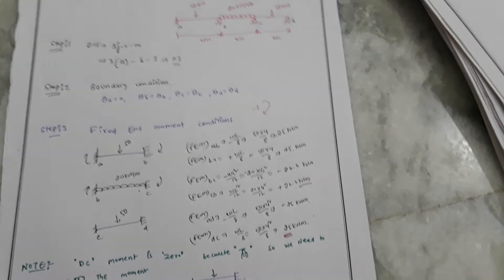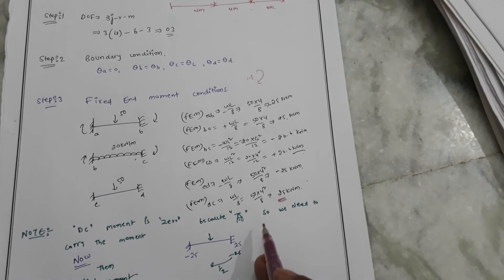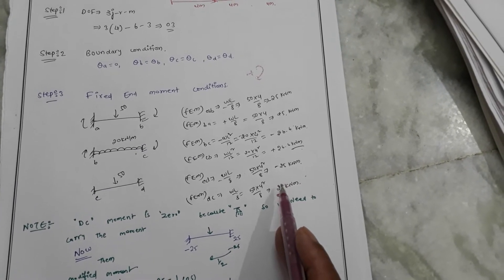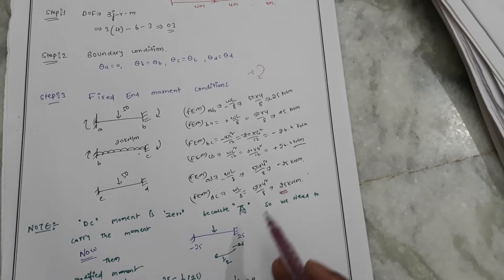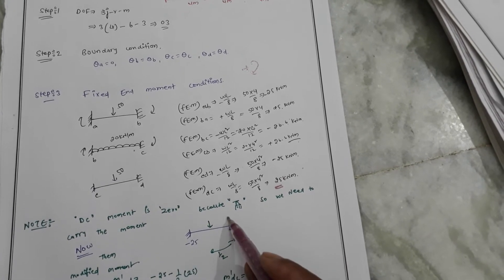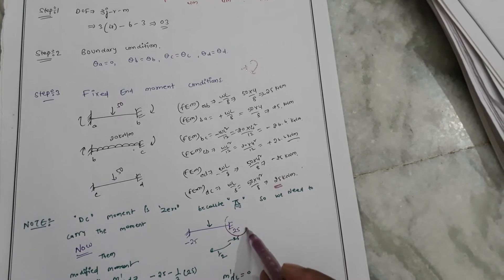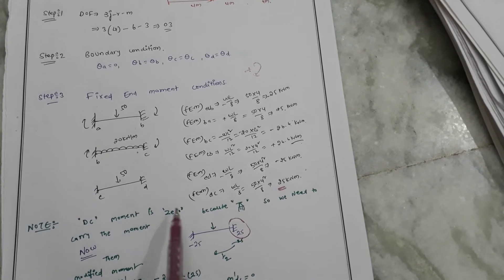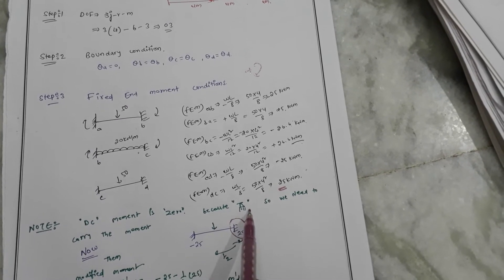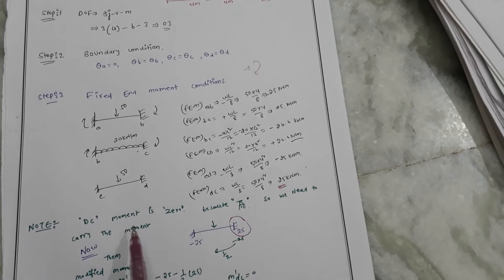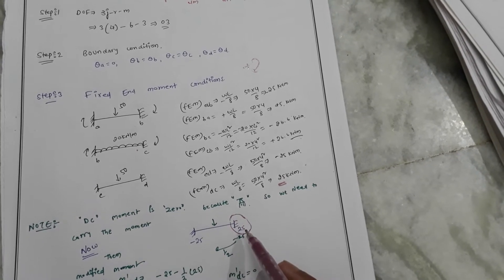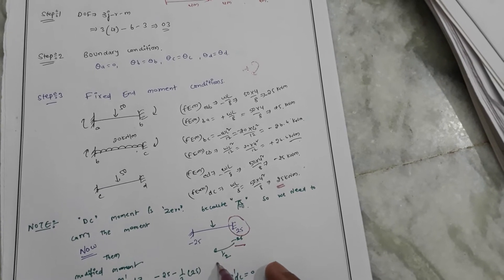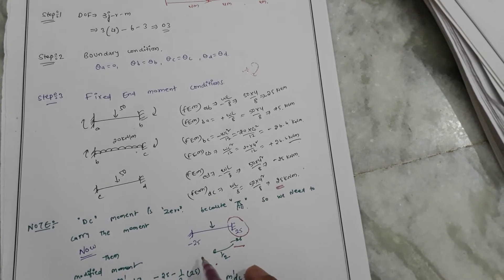Since the fixed end moment is 25, we need to add minus 25 to make the condition equal to zero — to satisfy the roller condition where the moment is zero. So we carry the moment: we add minus 25, and carry half of minus 25 to the adjacent joint.